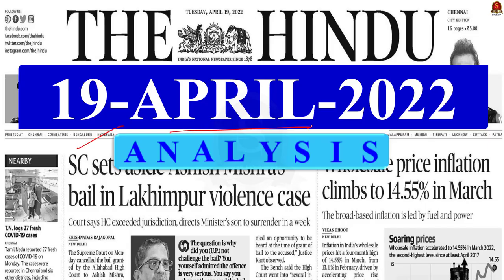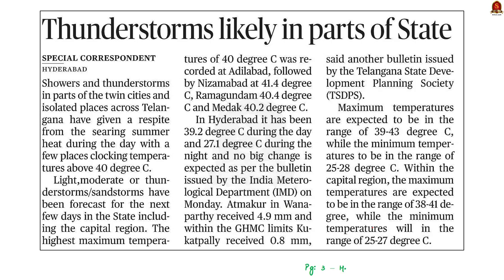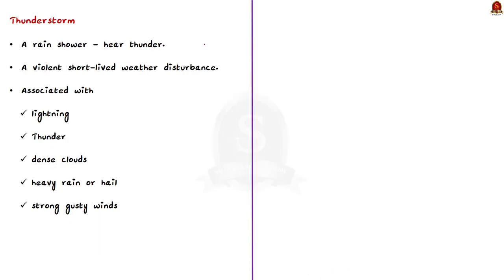Today is 19th of April 2022. The list of articles we will be discussing today is displayed here. Now let's start the discussion. This article talks about the showers and thunderstorms in parts of Telangana. Let us take this as an opportunity to learn about thunderstorms, their formation, and their types. First, what is a thunderstorm? A thunderstorm is a violent, short-lived weather disturbance.